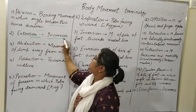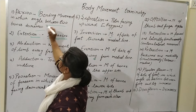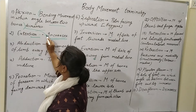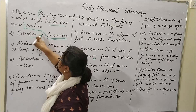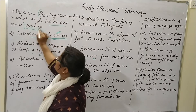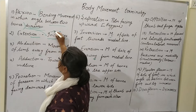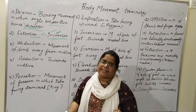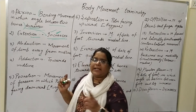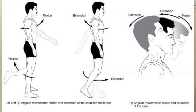In extension, the angle increases — the bending movement in which the angle between two bones increases. As I have written for flexion the angle decreases, in extension the bone angle increases. In the diagram itself you can understand very easily that this is the flexion and this is the extension.